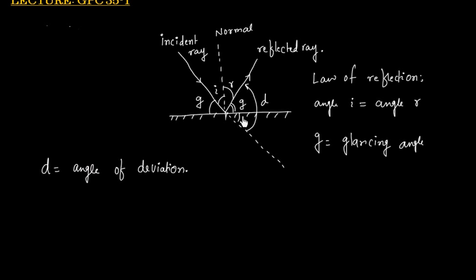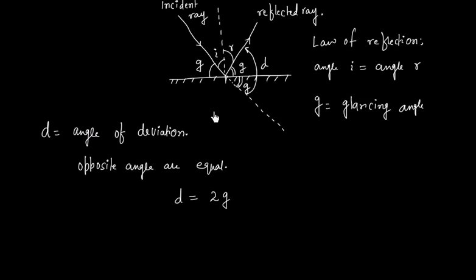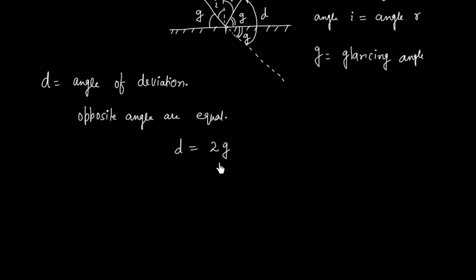Now this angle will also be equal to Z. You see these two angles are opposite angles, and from geometry we know that opposite angles are equal. So this angle is Z. The total deviation D is equal to Z plus Z, that is 2Z. So the deviation of the incident ray is 2Z.